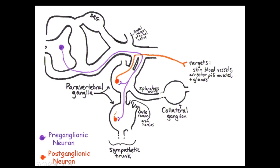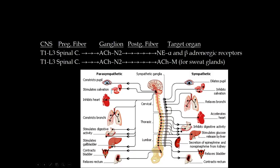After synapsing, the fiber exits through the gray ramus, which is unmyelinated. Myelin looks white, so a white ramus is myelinated and gray is unmyelinated. The postganglionic fiber then travels along with nerves out to target organs.